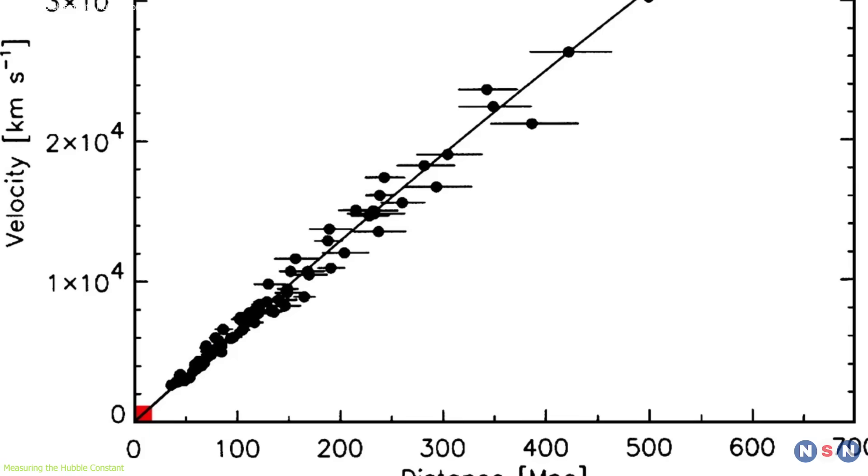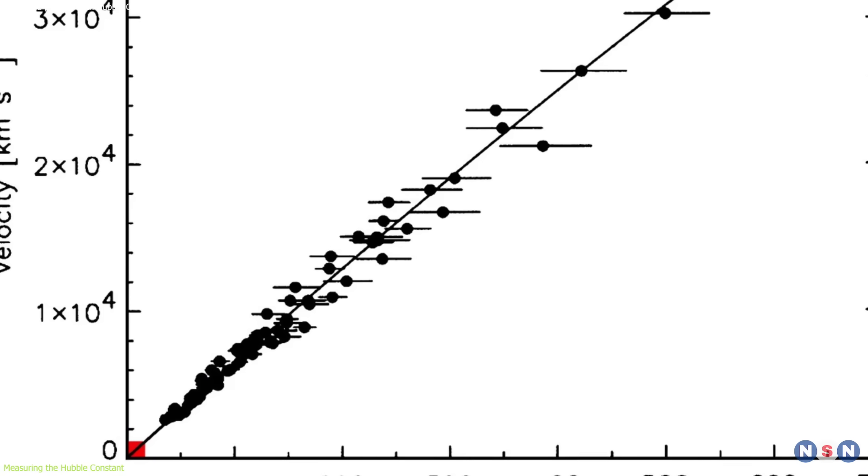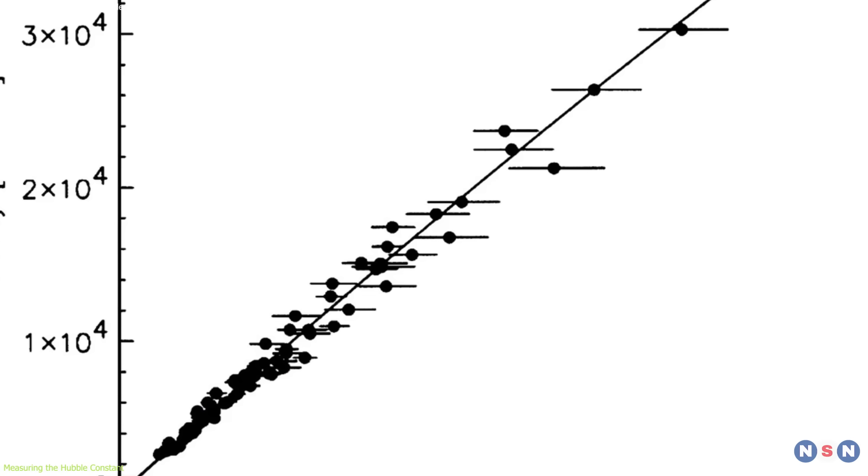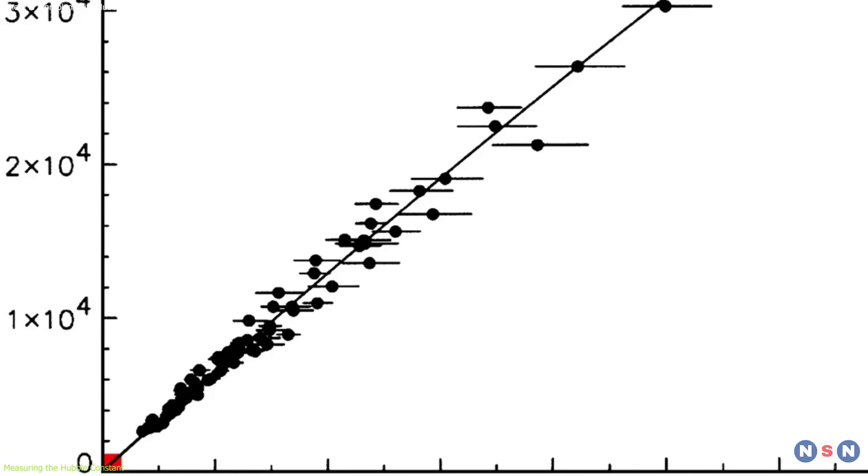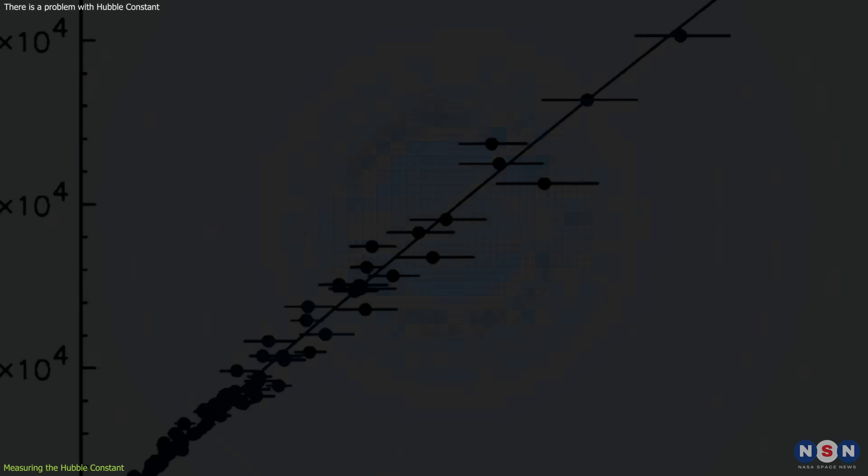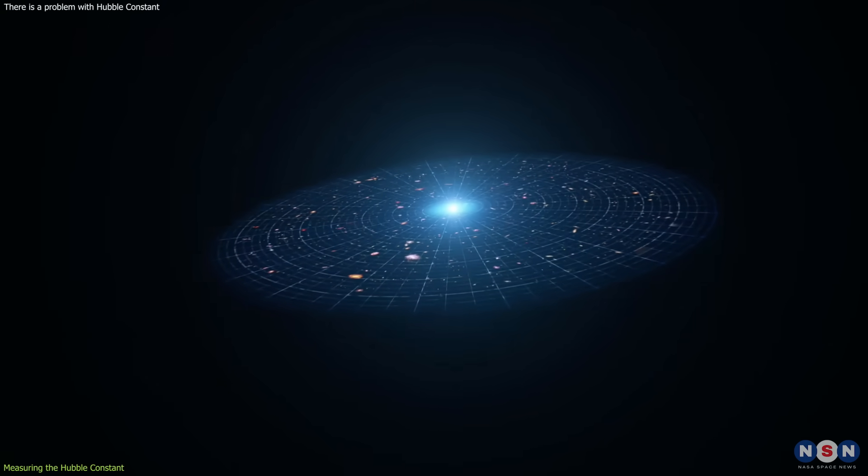The third step is to plot the distances and velocities of galaxies on a graph, called the Hubble diagram, and find the slope of the line that best fits the data. This slope is the Hubble constant, which tells us how fast the universe is expanding.